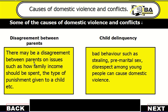The first one is disagreement between parents. There may be a disagreement between parents on issues such as how family income should be spent, or the type of punishment to be given to a child.